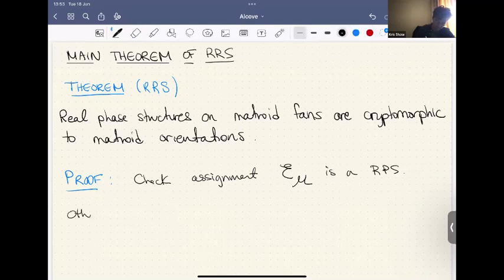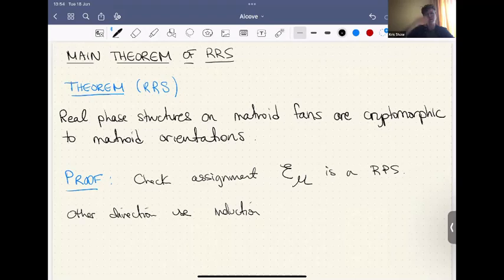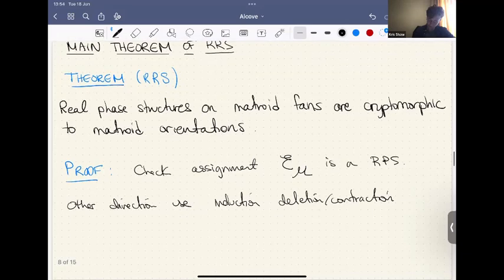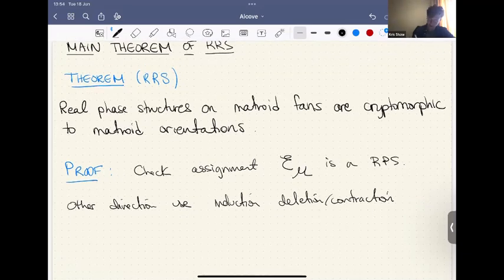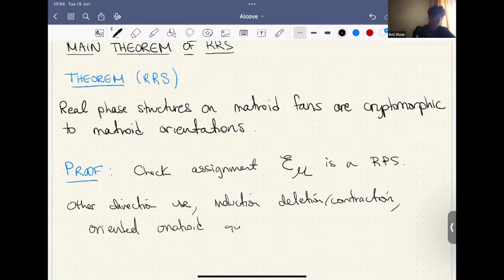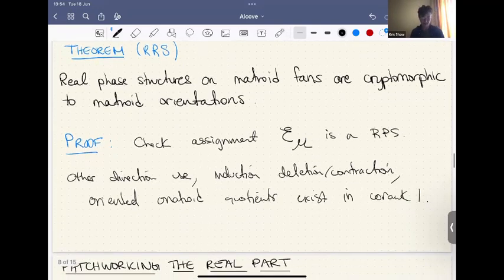And then for the other direction, we use, we use induction. So a double induction on kind of dimension and co-dimension of the fan, deletion contraction. So that's how to go from one matroid to kind of smaller matroids by removing, say, hyperplanes or restricting the hyperplanes. And the last thing we use is that oriented matroid quotients, quotients exist in co-rank one, which doesn't actually hold for all co-ranks. So that's kind of lucky.